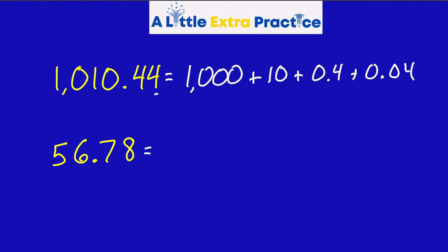The next one, fifty-six and seventy-eight hundredths. Fairly straightforward. Fifty, plus six, plus seven in the tenths, plus eight in the hundredths. So zero decimal zero eight. How'd you do? Hope you did well, and I will see you next time on A Little Extra Practice. Good luck, guys.